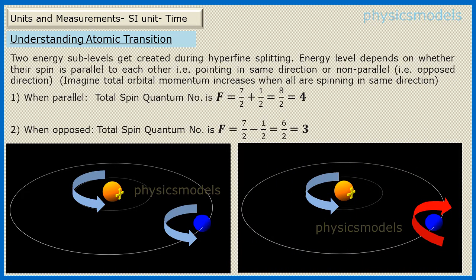Look at the two diagrams. On the left, the nucleus and the electron are spinning in the same direction — that's called parallel. On the right, the nucleus and the valence electron are spinning in opposite directions — that's called non-parallel. These two kinds of spin create two energy sub-levels during hyperfine splitting. When both spin in the same direction, the total spin quantum number adds up: f equals 7/2 plus 1/2, which is 4. When spinning in opposite directions, f equals 7/2 minus 1/2, which is 3. So two energy sub-levels, F=3 and F=4, get created.